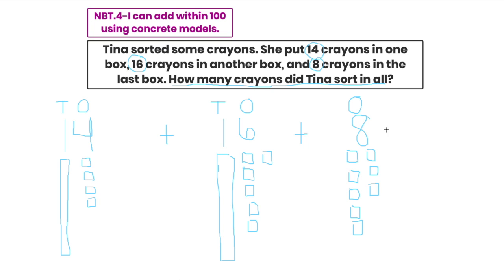I need to add my equal sign and a blank for where my sum will be. Now I need to determine how many crayons Tina sorted in all. I should count them, but remember — I need to start by counting my 10 rods first. Count with me: 10, 20. Now count on by ones: 21, 22, 23, 24, 25, 26, 27, 28, 29, 30, 31, 32, 33, 34, 35, 36, 37, 38. So Tina sorted 38 crayons in all.